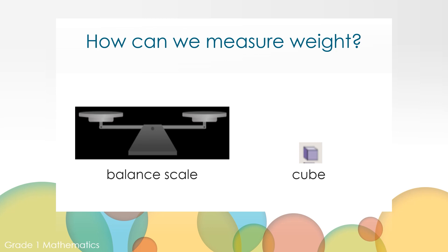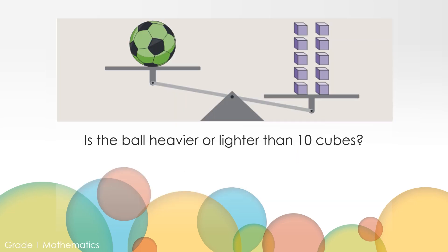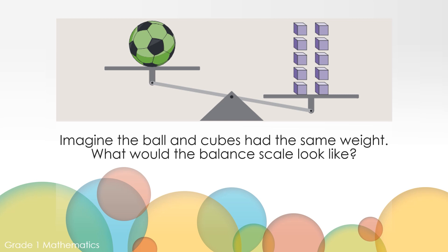But what if we wanted to know how much something weighs? For today, we're going to use balance scales and cubes to tell how many cubes an object weighs. Take a moment and look at this balance scale that is weighing a soccer ball. Is the ball heavier or lighter than 10 cubes? The ball is lighter than 10 cubes. How do you know? We know the ball is lighter because it is higher than the 10 cubes. Now imagine the ball and the cubes had the same weight. What would the balance scale look like? If the soccer ball and the cubes had the same weight, the balance scale would be even across.